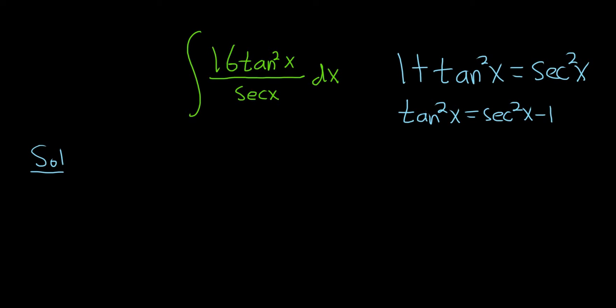Maybe a good idea is to use this identity and see what happens. Let's go ahead and try it. We have 16 times (secant squared x minus 1) all divided by secant x dx.